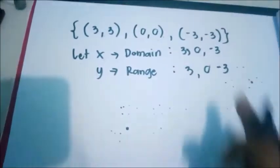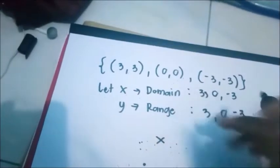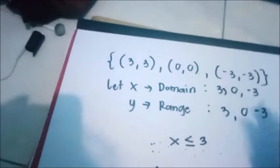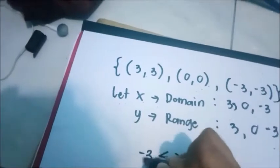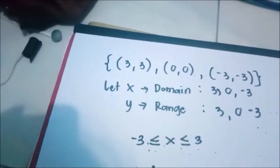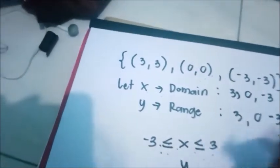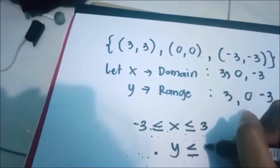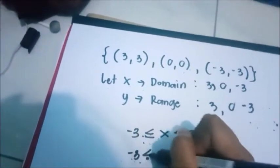Let us have the domain. X may be the domain. We have positive 3, so the maximum value of X is 3. And the minimum value is negative 3. How about the range? The maximum value of range is 3, and the minimum value is negative 3.